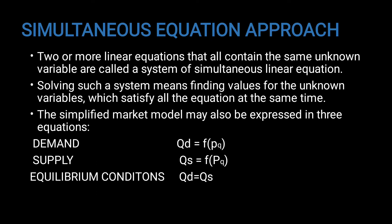The simultaneous equation approach uses two or more linear equations that all contain the same unknown variables, called a system of simultaneous linear equations. Solving such a system means finding values for the unknown variables that satisfy all equations at the same time. The simplified market model may also be expressed in three equations: demand Qd = f(P), supply Qs = f(P), and the equilibrium condition Qd = Qs, that is, demand equals supply.